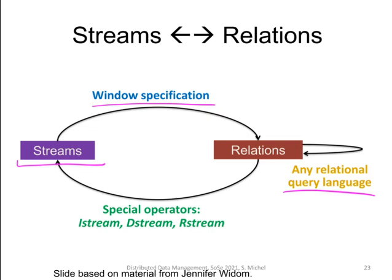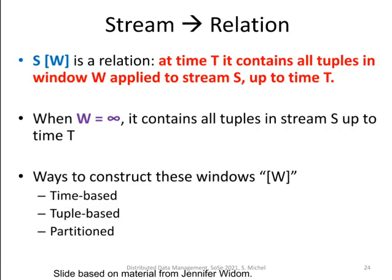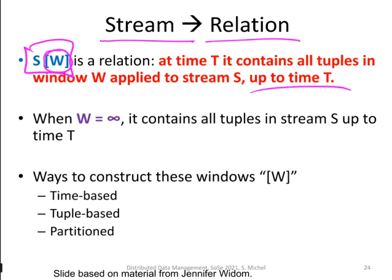How can we turn relations back into streams? For this we have three special operators: istream, dstream, and rstream. When converting a stream to a relation using a window, at time T the relation contains all tuples in the window of stream S up to time point T. When the window is unbounded, it contains all tuples from the stream up to time T.